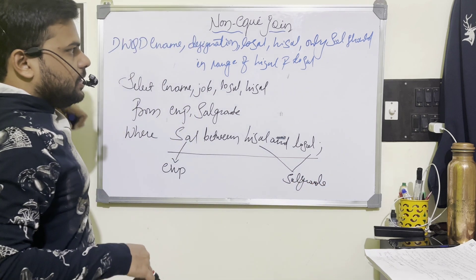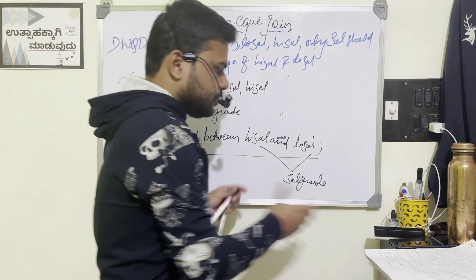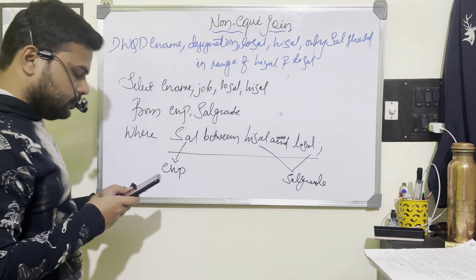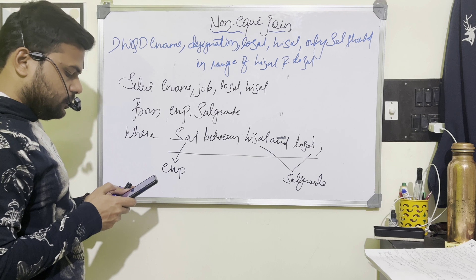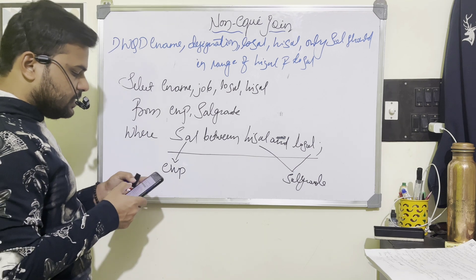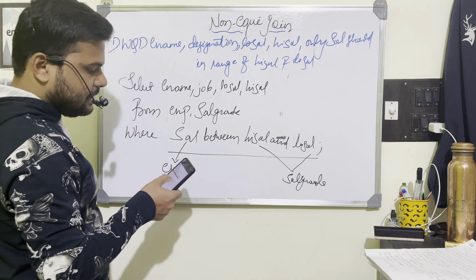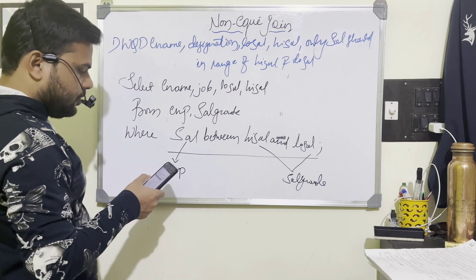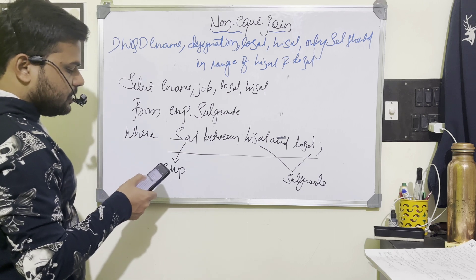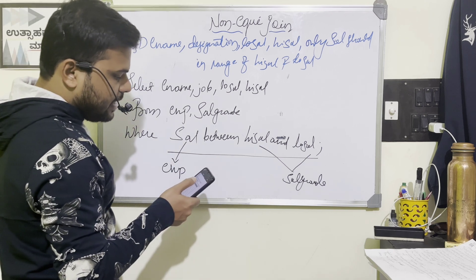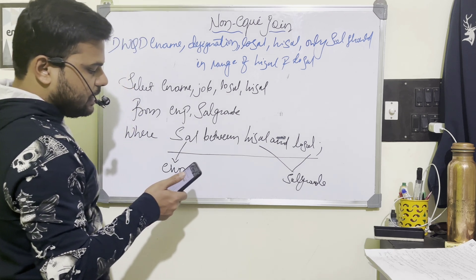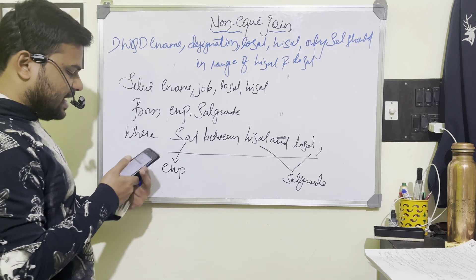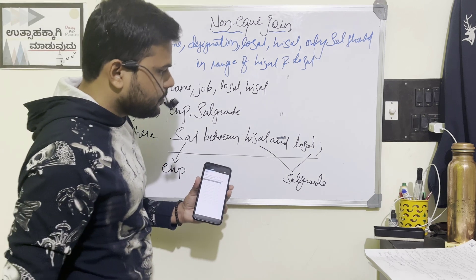Let me execute this query: SELECT ename, job, low_sal, high_sal FROM emp, sal_grade WHERE salary BETWEEN high_sal AND low_sal. Click on run — I am getting 15 records as output.